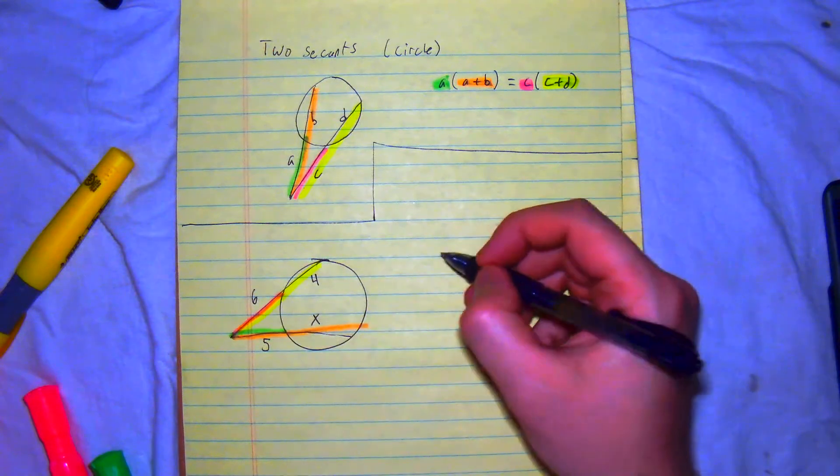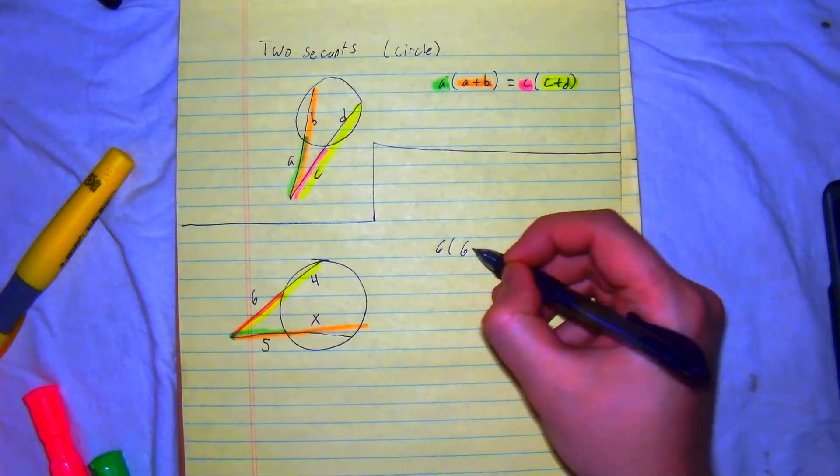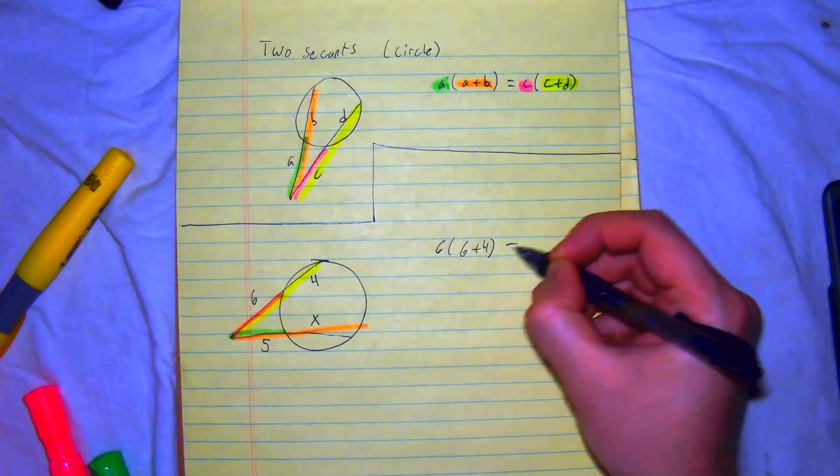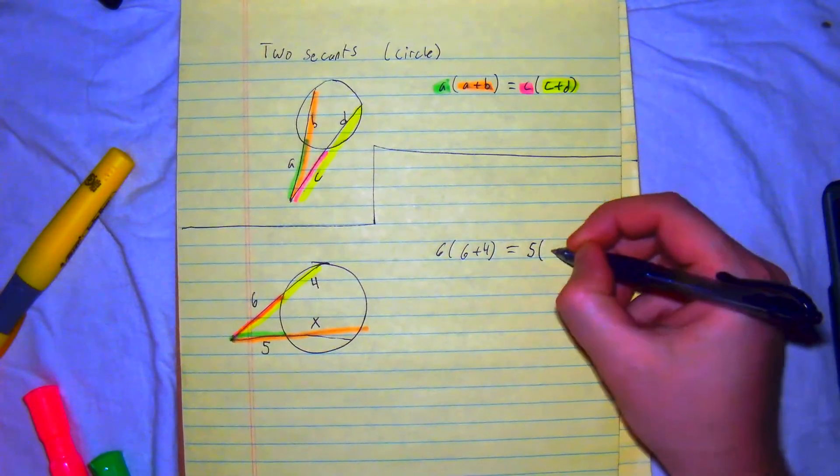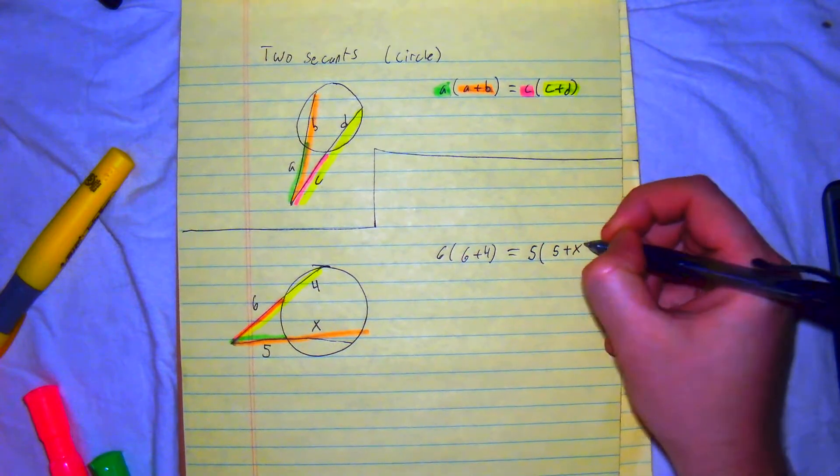All right. So, this is how it's going to look. 6 times 6 plus 4 is equal to 5 times 5 plus X.